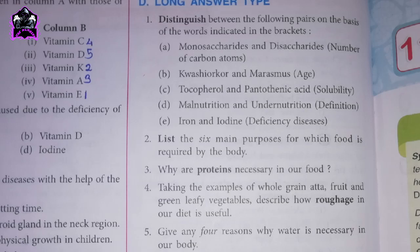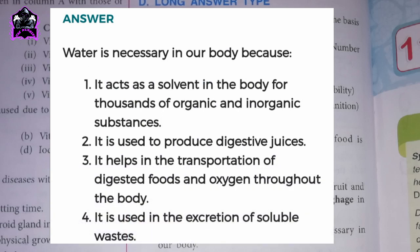Question: give any four reasons why water is necessary in our body. Water is necessary because: 1. It acts as a solvent in the body for thousands of organic and inorganic substances. 2. It is used to produce digestive juices. 3. It helps in the transportation of digested foods and oxygen throughout the body. 4. It is used in the excretion of soluble wastes.